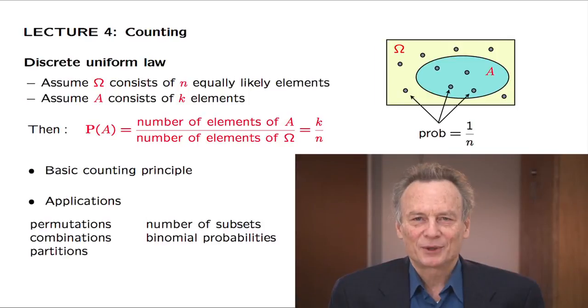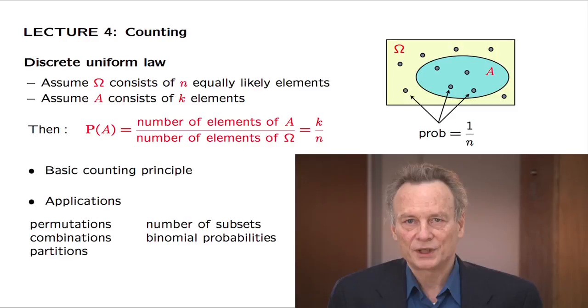A basketball coach has 20 players available. Out of them, he needs to choose 5 for the starting lineup and 7 who will be sitting on the bench. In how many ways can the coach choose these 5 plus 7 players? It is certainly a huge number, but what exactly is it?